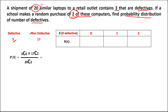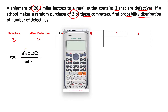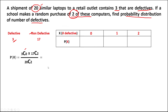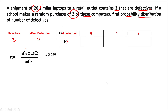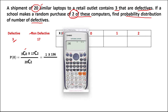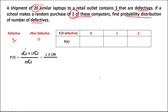To simplify: 3 choose 0 equals 1, and 17 choose 2 equals 136, over 20 choose 2 which equals 190. So 1 times 136 gives us 136 over 190. This is the probability for 0 defective computers.